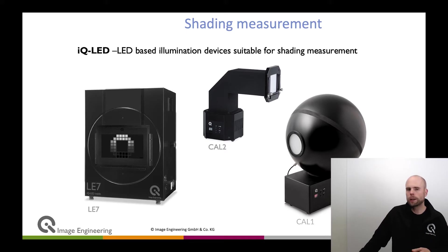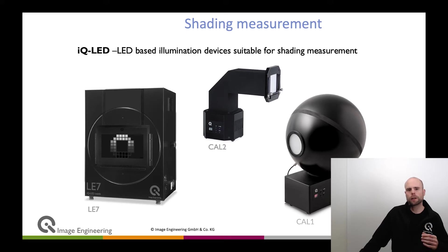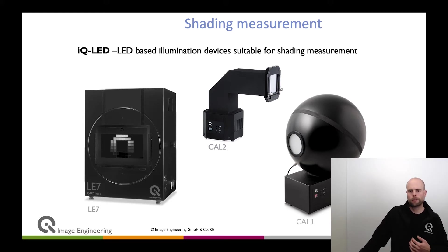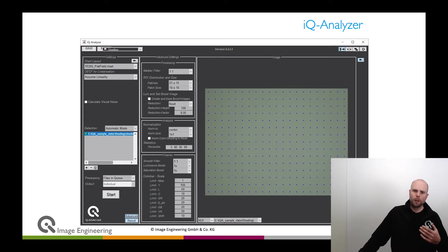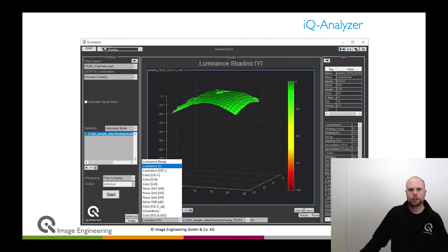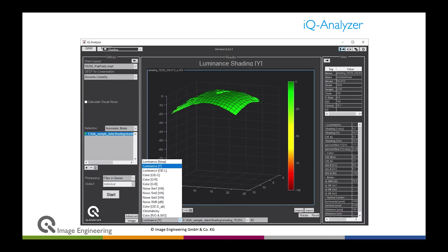Then we have the CAL1 or CAL2, also specifically designed with IQLED technology to provide a very uniform flat field. The CAL1 offers slightly higher uniformity while the CAL2 is smaller in form factor, so which device fits best depends on your production line constraints. You capture this flat field and feed it into software — for example, the IQ Analyzer software — where you can calculate luminance shading, color shading, and extract all the information needed for shading correction.